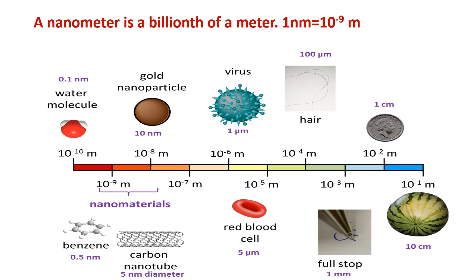Here the picture shows the relative dimensions of various objects. The size of a watermelon is 10 centimeters. The size of a coin is 1 centimeter. The size of a full stop is 1 millimeter. The size of a hair is 100 micrometers. The size of a red blood cell is 5 micrometers. The size of a virus is 1 micrometer. The size of a gold nanoparticle is 10 nanometers, a carbon nanotube is 5 nanometers, a benzene molecule is 0.5 nanometers, and a water molecule is 0.1 nanometers.